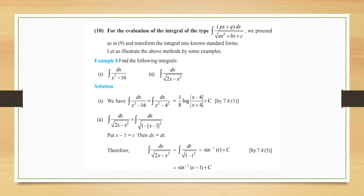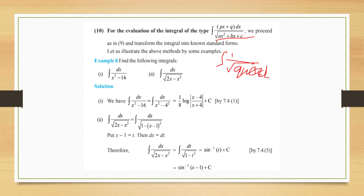For type 10, linear upon √(quadratic), the same splitting method applies: write linear = A·(d/dx of quadratic) + B. After finding A and B, one integral becomes f(x)^n · f′(x) form — using the formula f(x)^(n+1)/(n+1) — and the other becomes 1 upon √(quadratic).